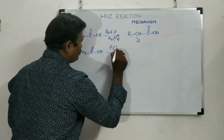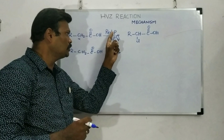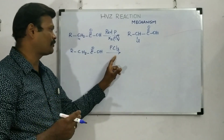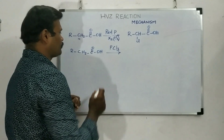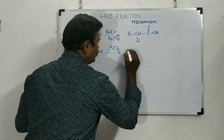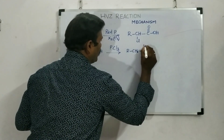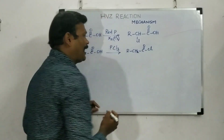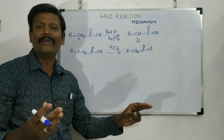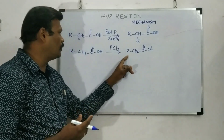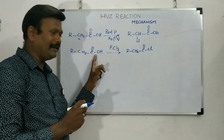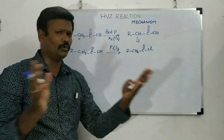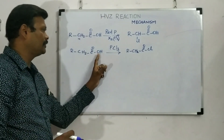The reactant RCH₂-COOH reacts with PX₃ or PCl₃. The red phosphorus reacts with the halogen to form its respective phosphorus trihalide. This phosphorus trihalide chlorinates the carboxylic acid. The product is RCH₂-C(=O)Cl — an acid chloride. The -OH group of the carboxylic acid is converted to -Cl, similar to how PCl₅ or SOCl₂ would do it.